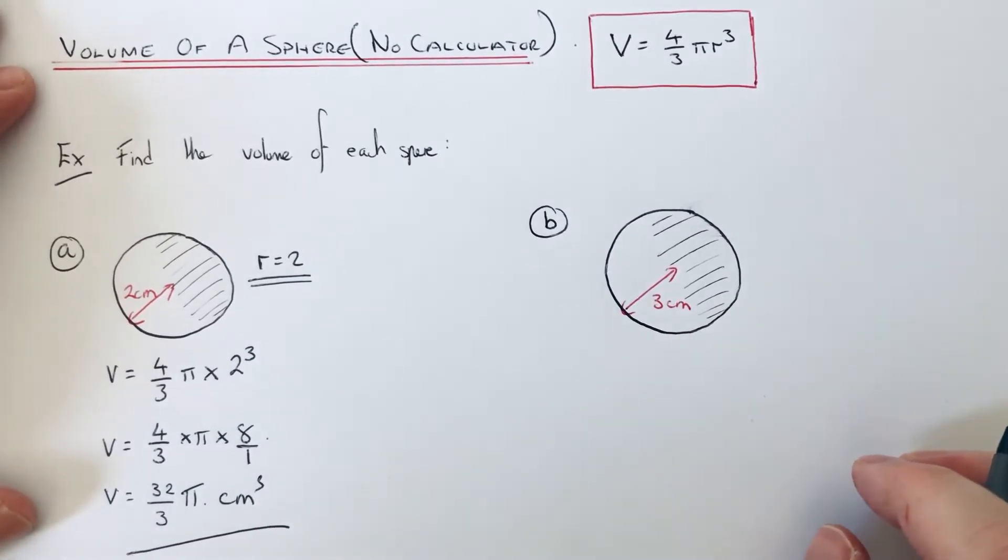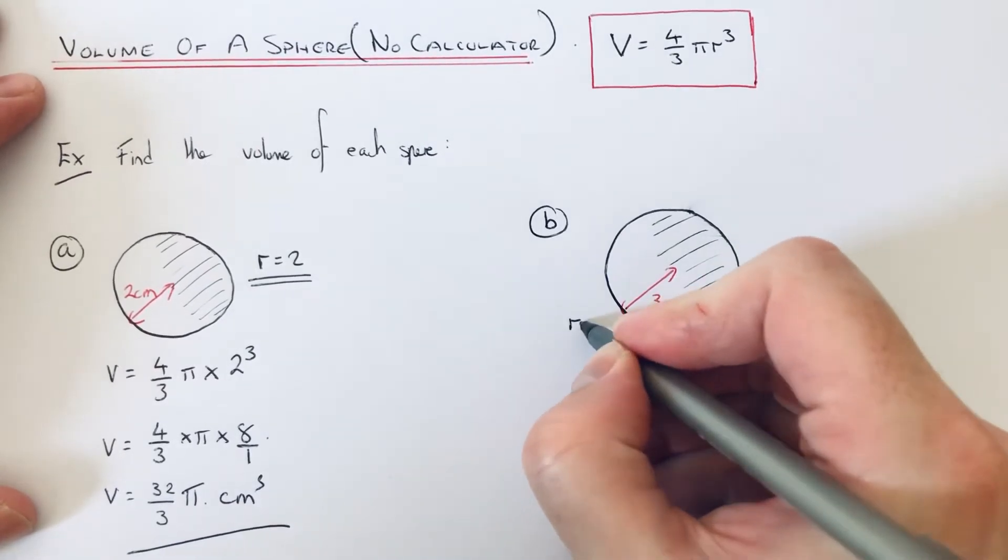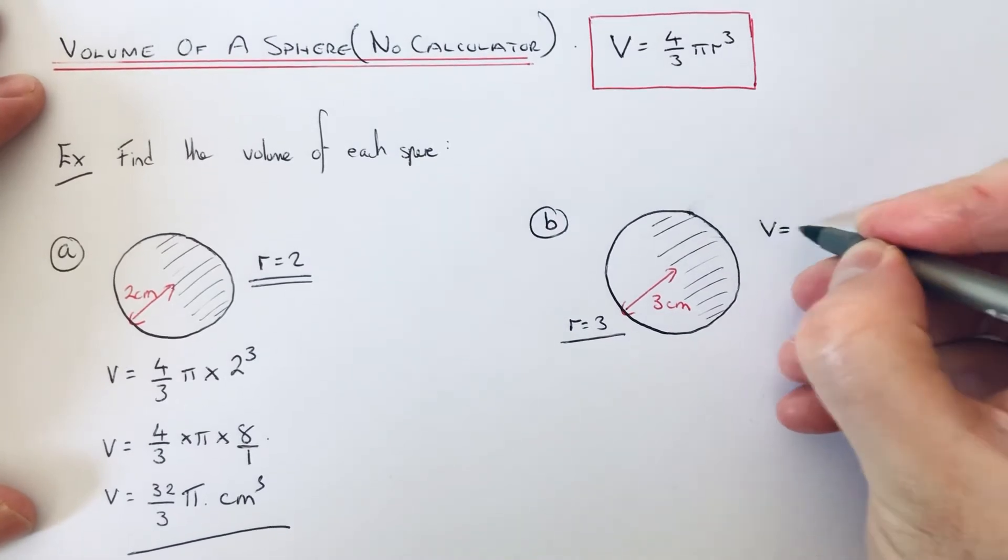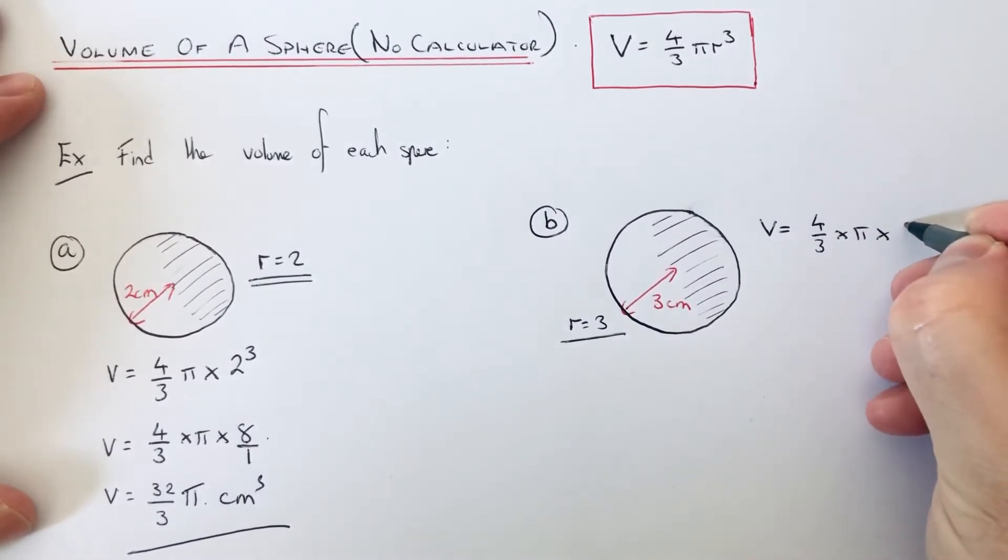Let's move on to part b. Again, we have to find the volume of the sphere. This time our radius is 3, so we put this into our formula. That would be V = 4/3 × π × 3³.